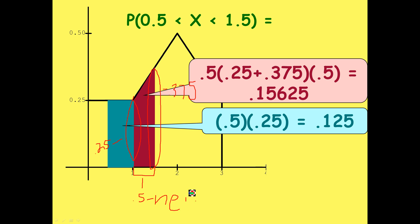We multiply that all together, and we get 0.15625. And if we want to find the total area, we can just add the individual areas together. And what do we get? 0.28125, which means the probability of the random variable x having a value of 0.5 to 1.5 is going to be 0.28125, or 28.125%.